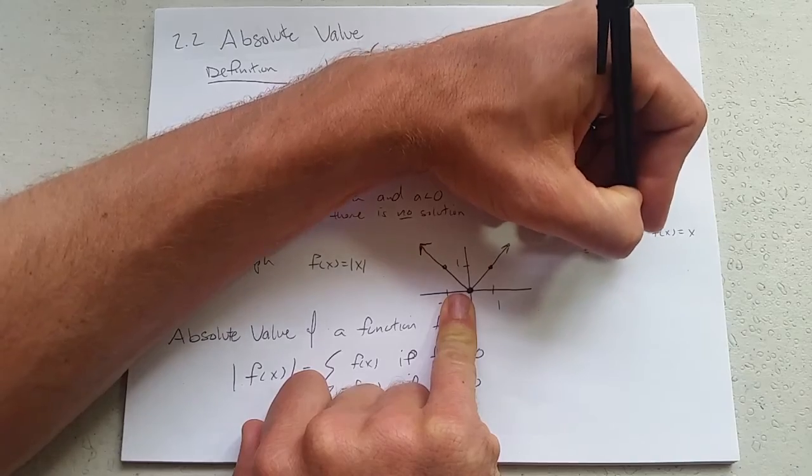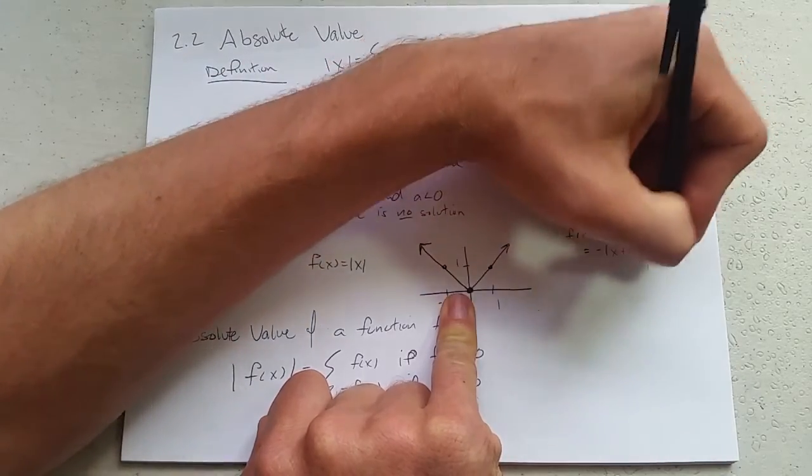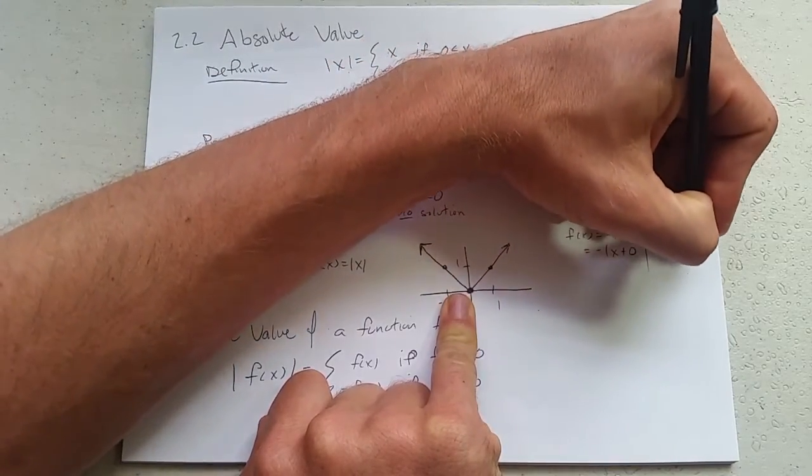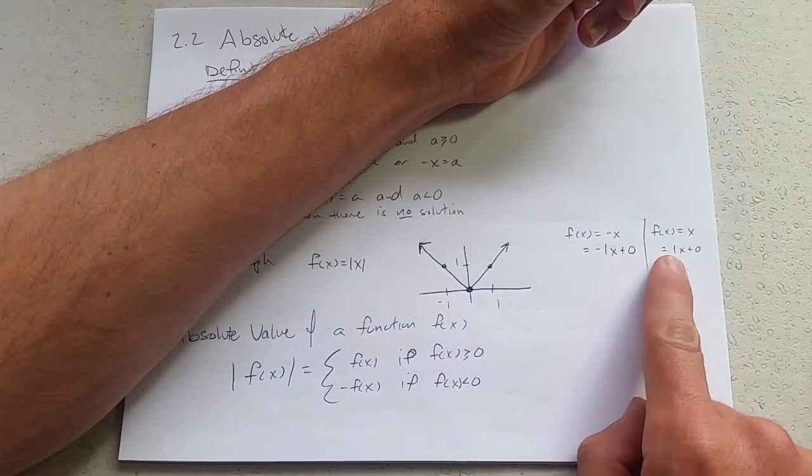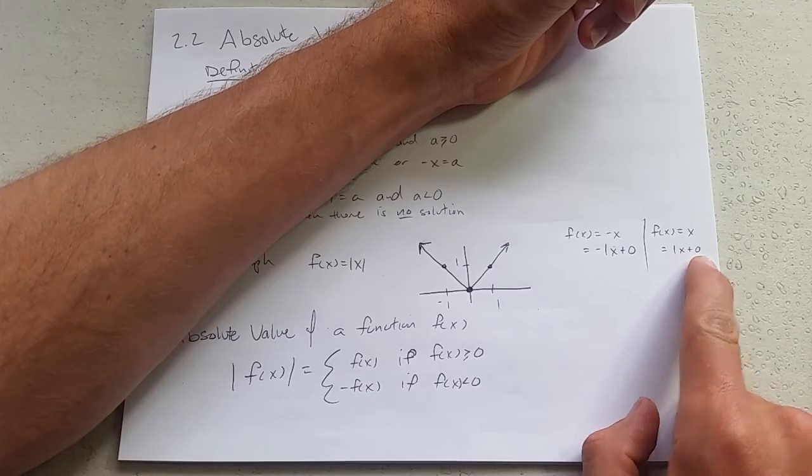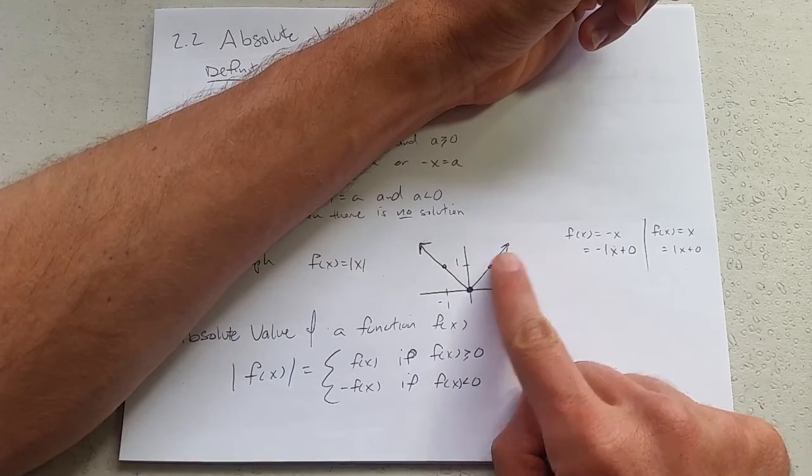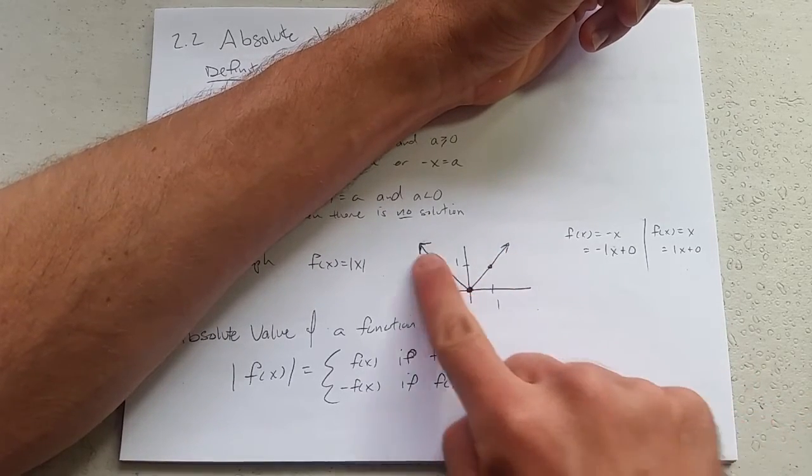This is negative 1x plus zero. And the second part is 1x plus zero. Slope negative 1, y intercept 0. Slope 1, y intercept 0. There's the positive slope of 1. The negative slope of 1.